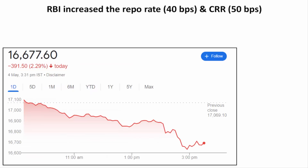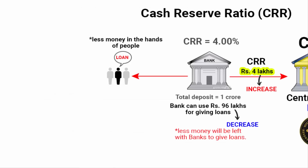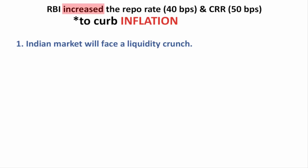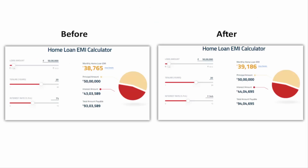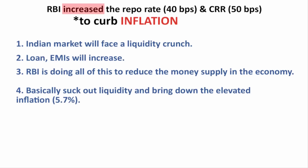Because of that, the Indian stock market went down by almost 2.3%. RBI increased the repo rate and CRR to curb inflation, which means in the coming weeks and months, the Indian market will face a liquidity crunch. So hold on to your cash and don't spend it on unnecessary things. For those with EMIs, they are expected to rise. For those planning to take a loan, just hold on — the cost of borrowing will increase and you will end up paying more or your loan tenure will increase. RBI is doing all of this to reduce the money supply and bring down elevated inflation that is at 5.7%.